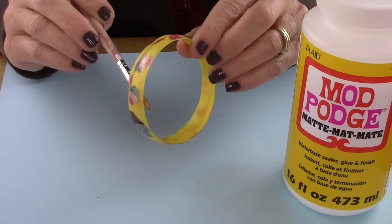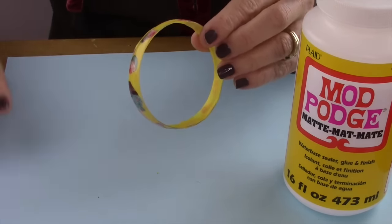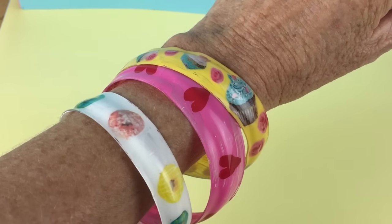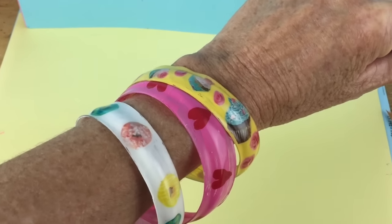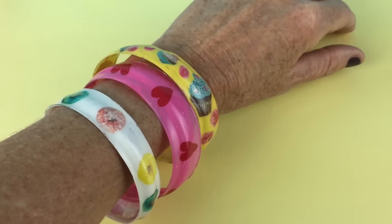After all the bracelets dry, take some Mod Podge to seal it on the inside. Look at how they turned out. Can you believe these were plastic water bottles?